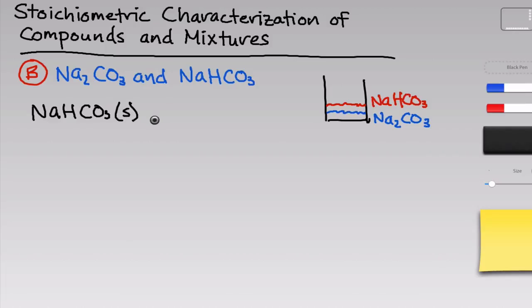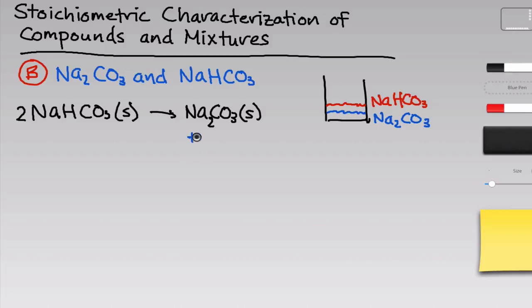Strong heating of the solid with a Bunsen burner leads to a decomposition reaction in which two equivalents of sodium bicarbonate decompose to form sodium carbonate solid (Na2CO3), as well as gaseous water vapor and carbon dioxide. The fact that these products are gaseous is going to be important for this experiment.